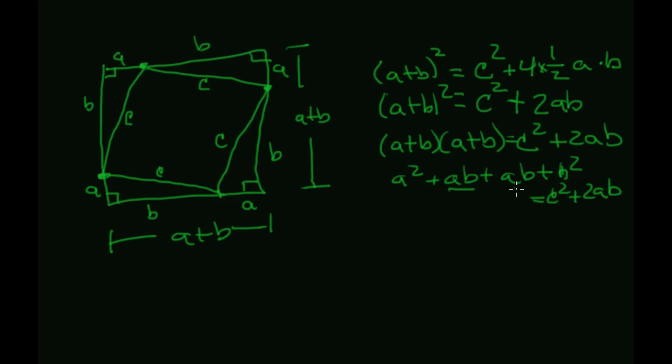So these are the same, so I can combine those like terms. A squared plus two A, B plus B squared is C squared plus two A, B. And then we subtract the two A, B's, and lo and behold, A squared plus B squared is equal to C squared.